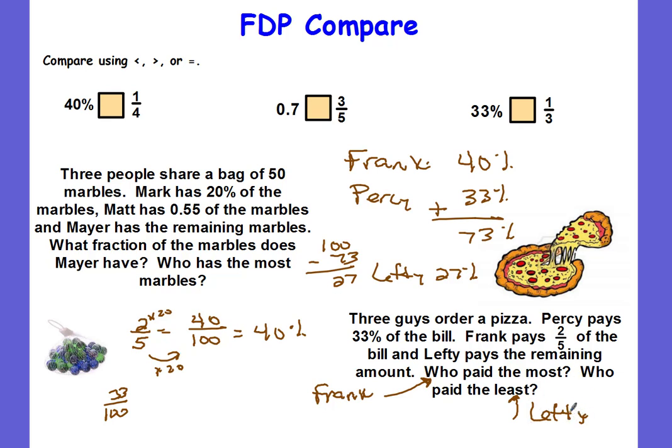You could also have changed them all to decimals: 33 percent becomes 0.33, two-fifths becomes 0.4. There are several different ways of doing it — there's not one right way. You have to do it the way that's most comfortable for you, whether that's putting them all as percents, all as decimals, or fractions. Sometimes when you're given more percents, it's easier to change everything to percents.